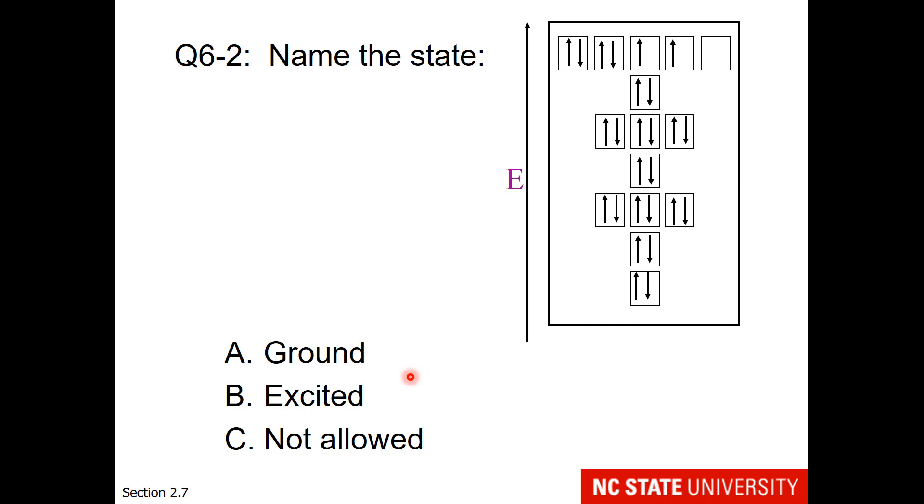Here is another state to name. Everything looks good. And the important area would be this 3d sublevel right here. Notice we have pair, pair, lone electron, lone electron, empty.